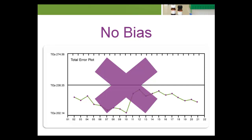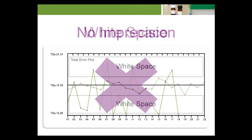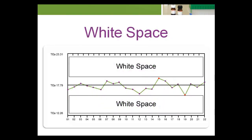The conditions that suggest narrowing the quality goal include: no bias, no imprecision, and the total error plot has a lot of white space — that is, the space in which no values lie.